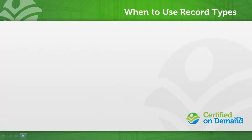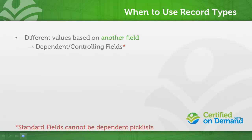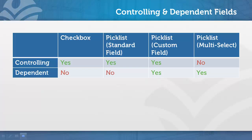Let's look at a few examples. Take the make/model example that we showed on the previous slide — picklist values vary based on the data within another field; make influences model. When that's the case, you can generally use dependent and controlling picklist fields without the need for a record type.